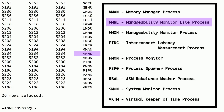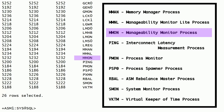MMNL is the manageability monitor light process. This process performs many tasks relating to manageability including active session history, data sampling, capture, and metrics computation. MMON is the manageability monitor process. This process performs many tasks related to manageability including taking automatic workload repository snapshots and performing automatic database diagnostic monitor analysis.